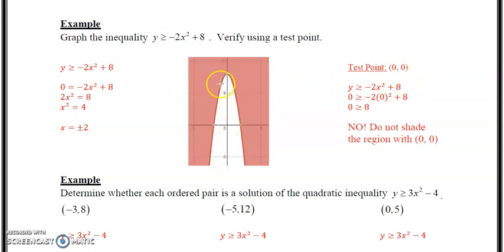So the y-intercept is your vertex in this particular case. And we just graph down, test point 0, 0 here. Plug them in, 0 greater than or equal to -2 multiplied by 0 squared plus 8. So 0 is greater than or equal to 8, which we say no, that's not true. So we do not shade the region with 0, 0.